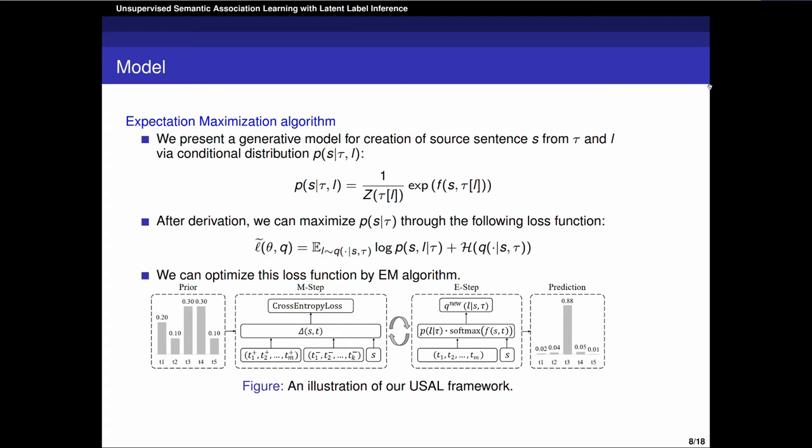Let me introduce our model in detail. We present a generative model for semantic association learning task. We formulate the conditional distribution P(S given tau, L) related with the score function F. L is the index of the ground truth target sentence. After derivation, we can maximize P(S given tau, L) through the following loss function. We can optimize this loss function by EM algorithm. In this process, we can learn the correct association between the source sentence and the ground truth target sentence.